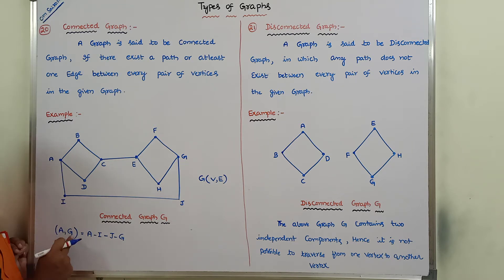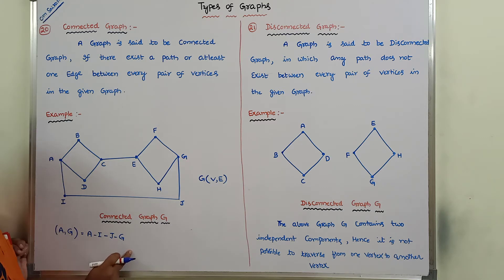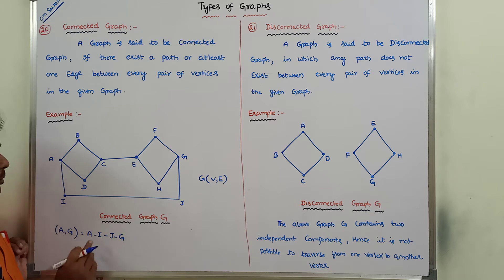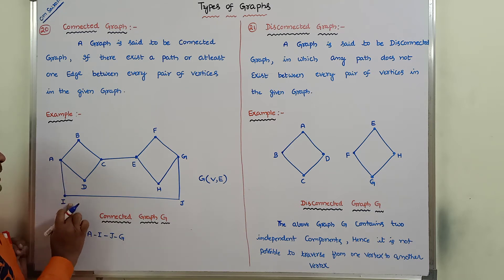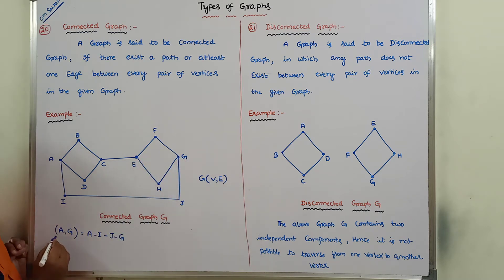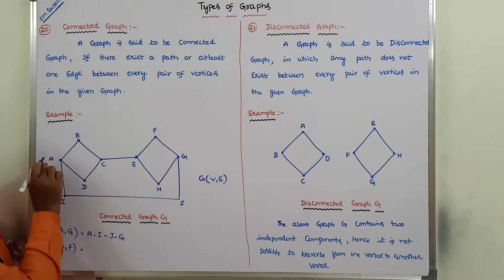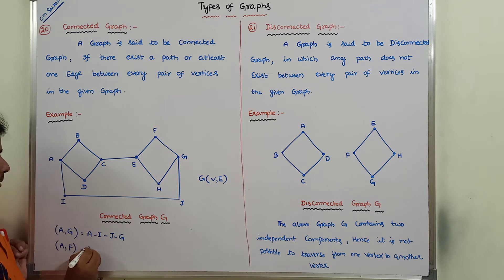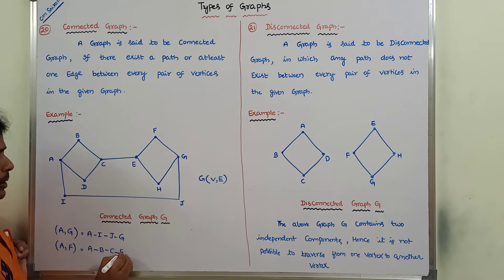These pair of vertices in the given graph G are connected by using a path. A path is nothing but a set of edges: A to I, I to J, J to G. Next, I am taking another pair of vertices (A, F): A to B, B to C, C to E, E to F.